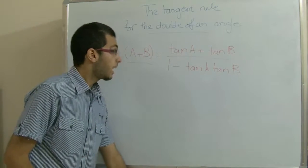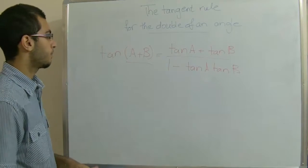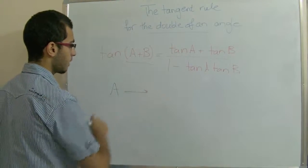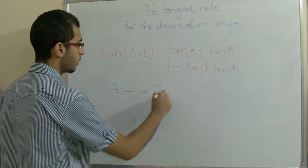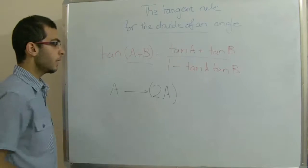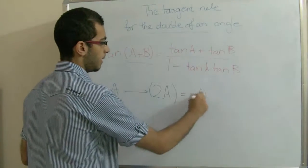Now we are talking about the double of an angle. Let's say this angle is A, so the double of this angle accordingly will be 2A. This 2A can be written as A plus A.